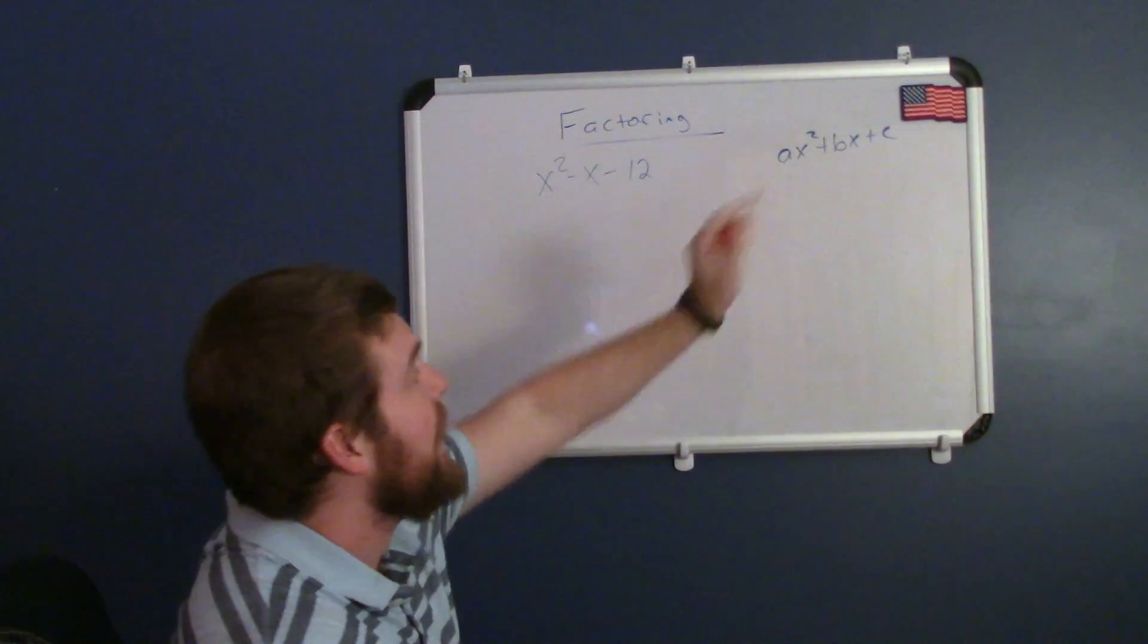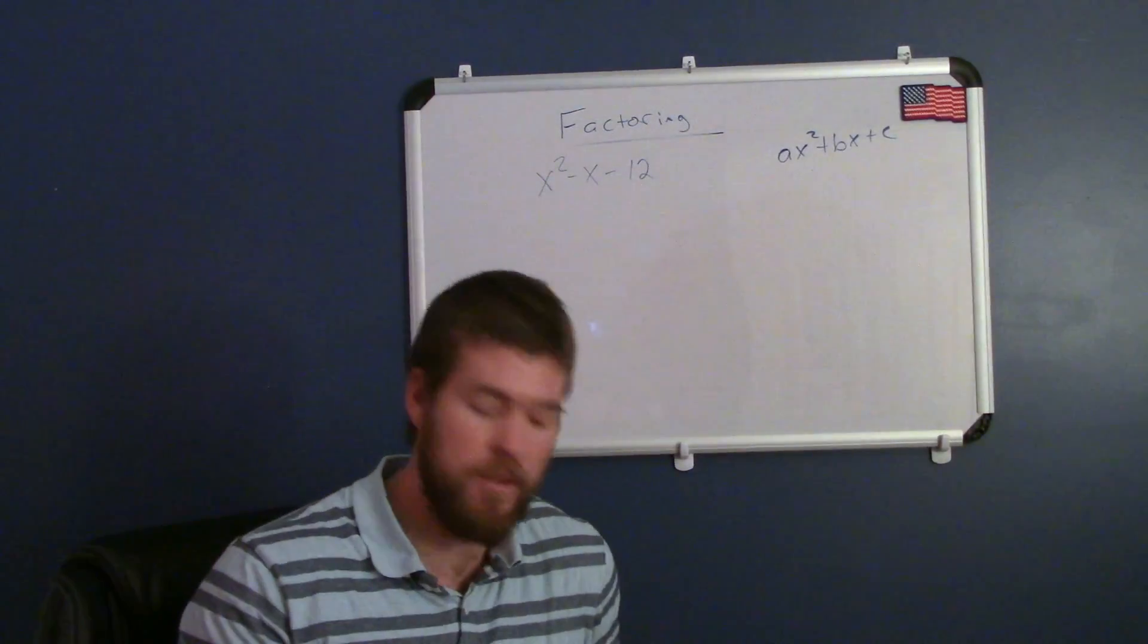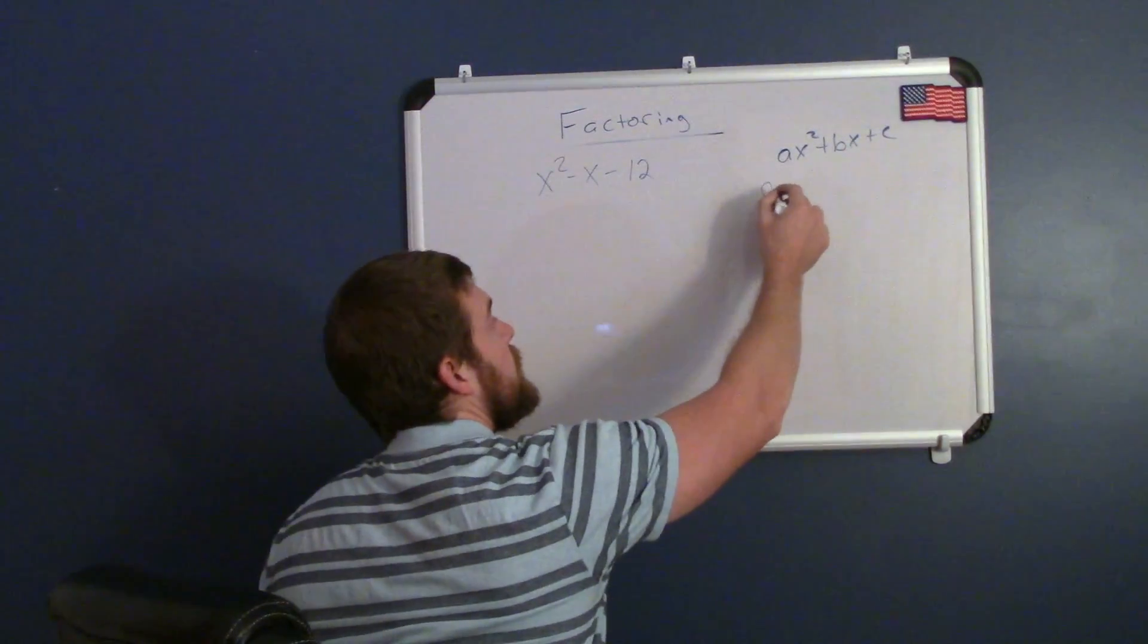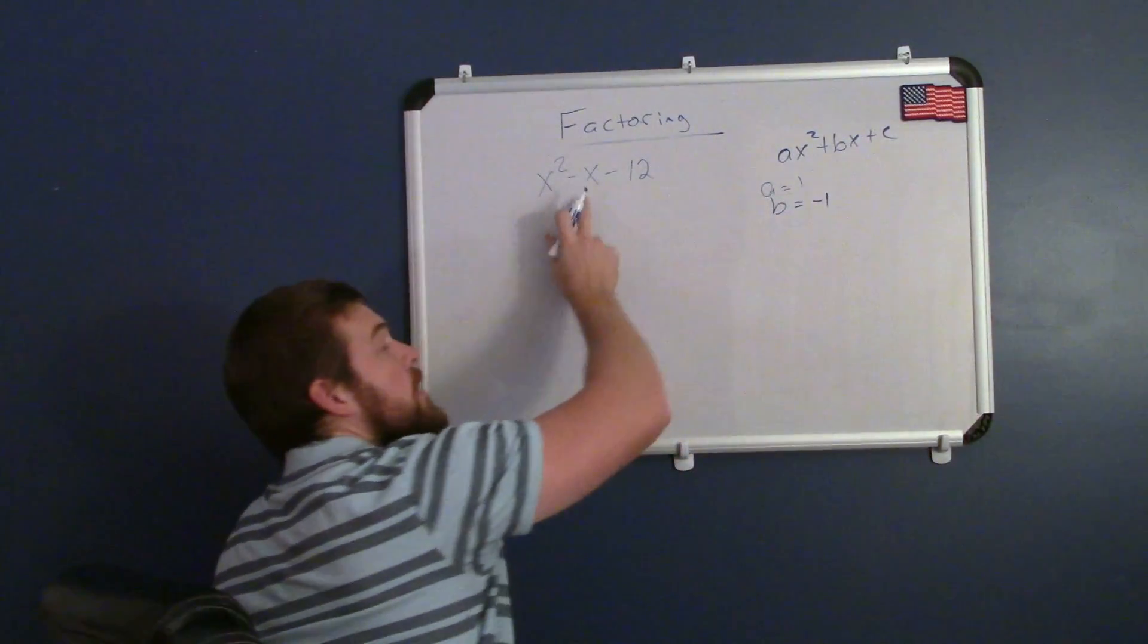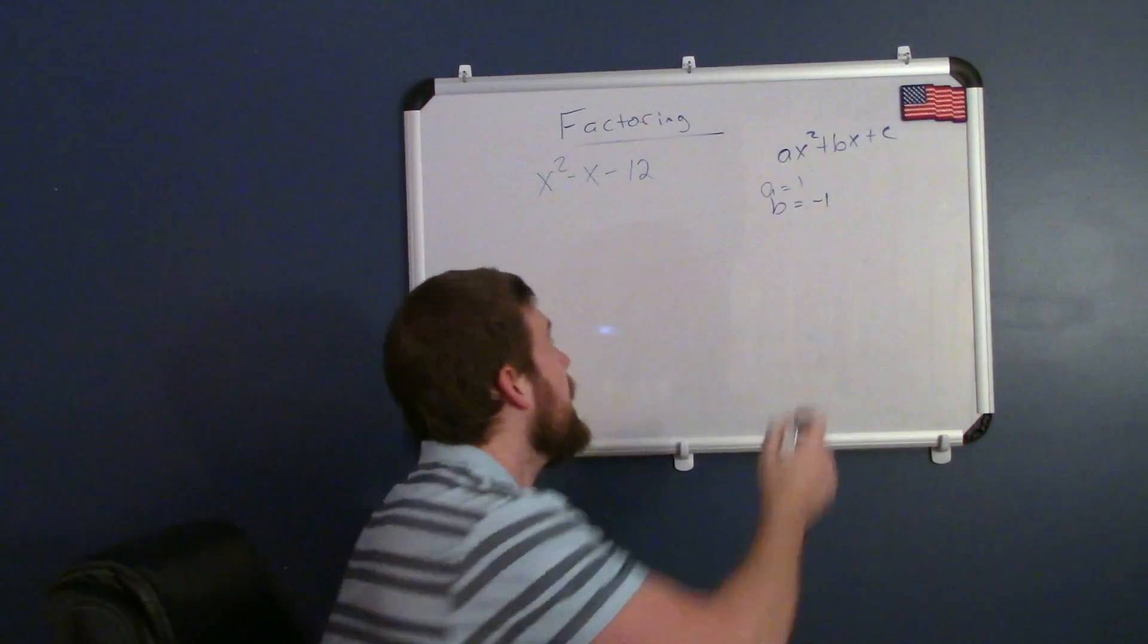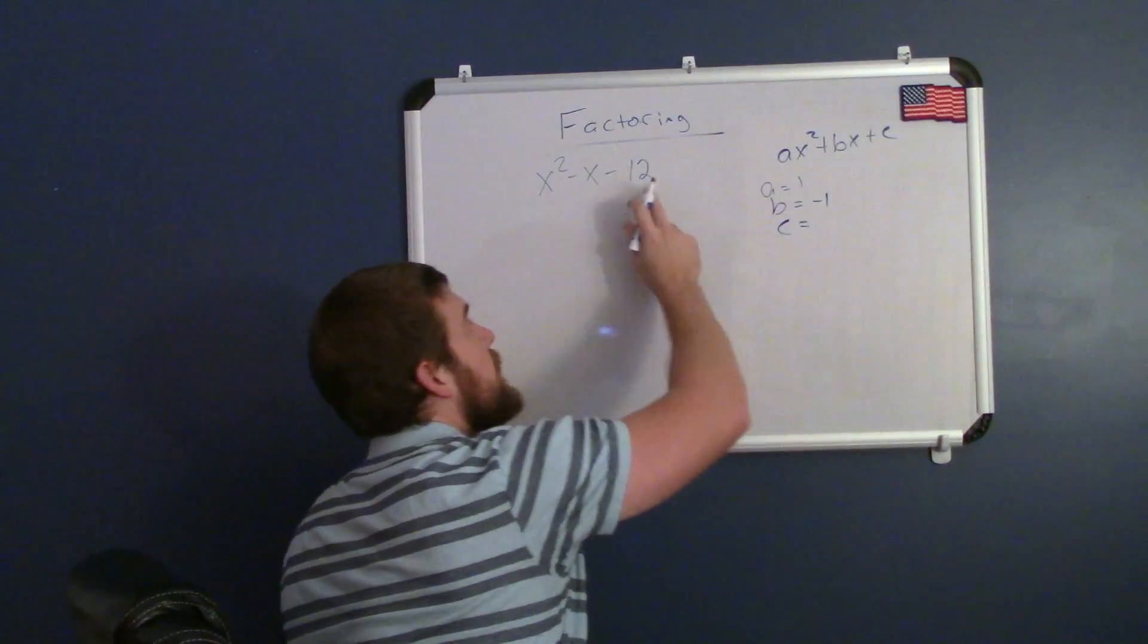It is again in the form ax squared plus bx plus c, where our a value is 1. Our b value here is negative 1, the coefficient in front of x, and our c value is negative 12.